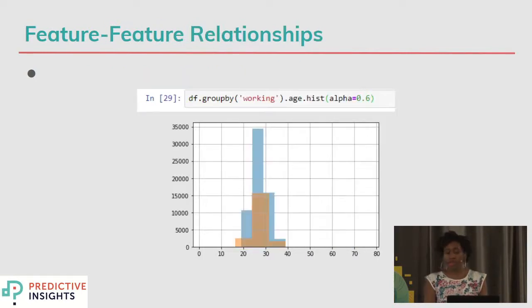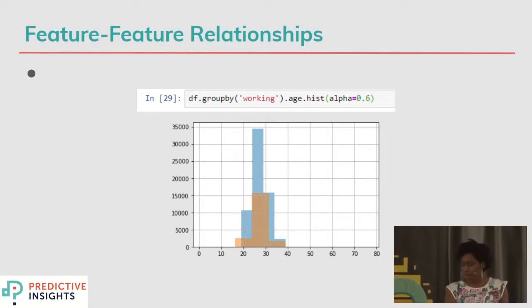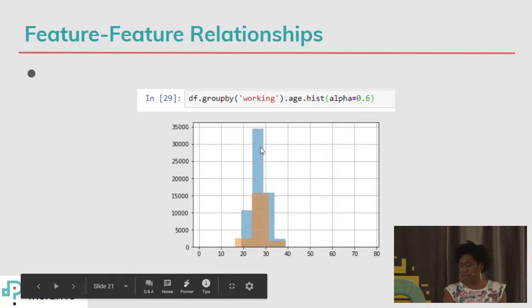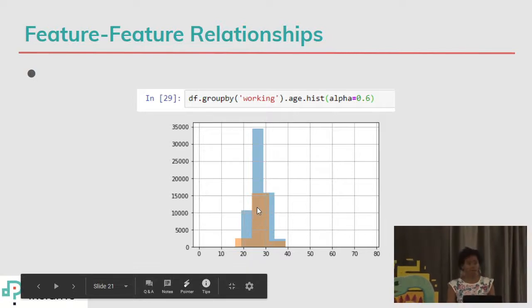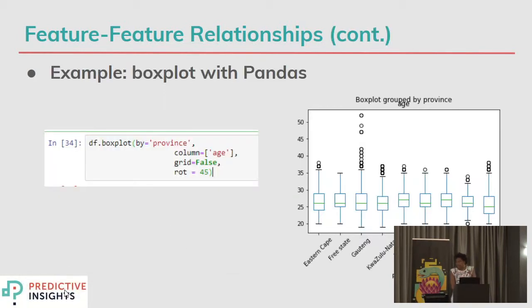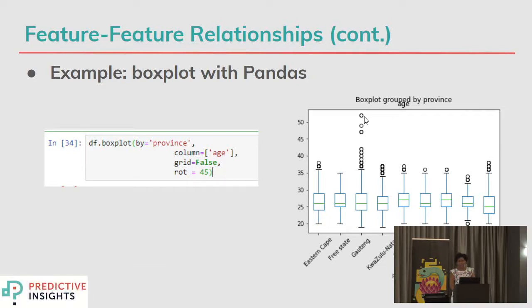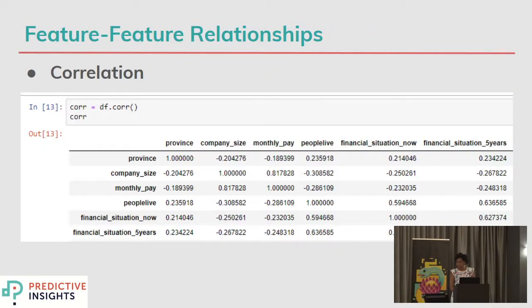Other than feature distributions, I might also want to visualize feature-feature relationships. For example, I don't just want age alone — I want to know the age distribution based on whether people are working or not. In blue there are the people not working, and in orange the people who are actually working. In both cases, in the Harambe program, we still mainly have people in that 25-to-30 bracket. I might also want to see it as a boxplot over another variable — for example, what is the age of people I'm getting in different provinces? It looks like it's roughly the same, and I can see that most of my outliers are inside of Gauteng, and I can use that information when I report.